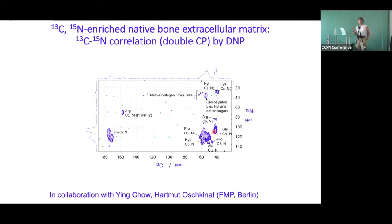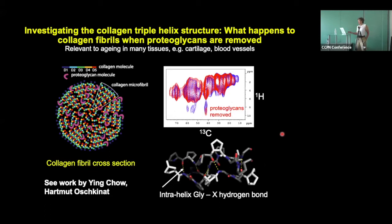The problem with DNP is that it normally causes line broadening, because you're freezing your protein down to around 90 Kelvin, so you pretty much stamp out all molecular motion. Bizarrely, for native tissues — and I think it's something to do with the antifreeze properties of a native tissue — we don't actually see that much line broadening. We can also do heteronuclear correlation, just as you would in solution state, correlating proton with carbon. The issue is that proton-proton dipolar couplings are incredibly strong, and even with magic angle spinning you only partly spin them out.